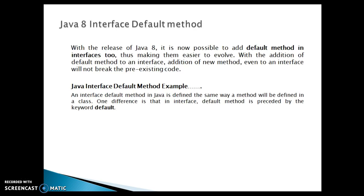This makes interfaces easier to evolve. With the addition of a default method to an interface, adding a new method to an interface will not break the pre-existing code. For example, if interface I1 is implemented by many classes and tomorrow you add one more method as a default method, that will not force all implementation classes to implement it. From Java 8 onwards, interfaces are also easy to evolve, like abstract classes.